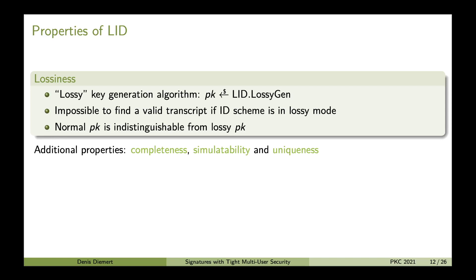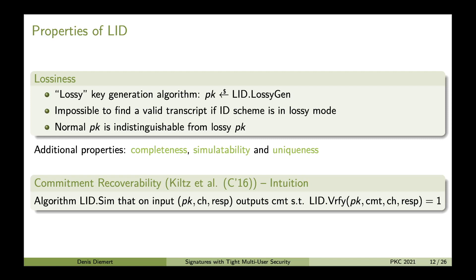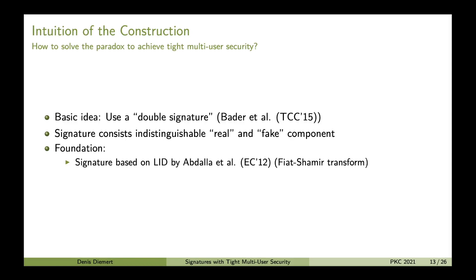Lossy identification schemes have other properties as well. Completeness means honestly generated transcripts are valid. Simulatability means we can produce transcripts without having a secret key. Simulatability and uniqueness will be our main tool to achieve strong unforgeability, though I won't discuss that in detail today. We also use another property for our refinement: commitment recoverability. Commitment recoverability intuitively means there is an algorithm Sim that, given a public key, challenge, and response, outputs a commitment such that (commitment, challenge, response) is a valid transcript under the public key. So given a challenge and a response, we can recover the commitment.